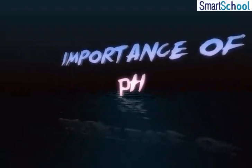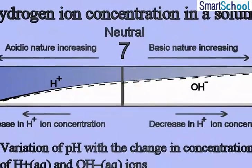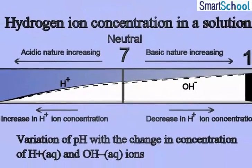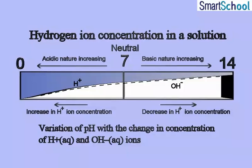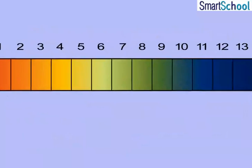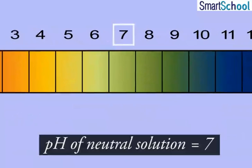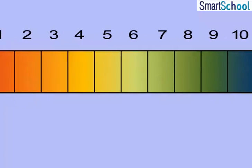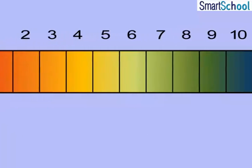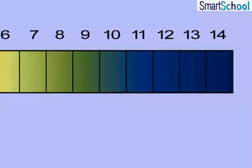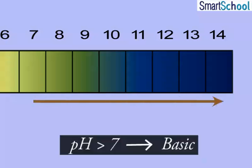pH is the measure of H+ ions present in a solution, indicating the acidic or basic strength of the solution. The pH of a neutral solution is 7. Values less than 7 on the pH scale represent an acidic solution, whereas with the increase in values from 7 to 14 on the pH scale, the basic strength of the solution increases.